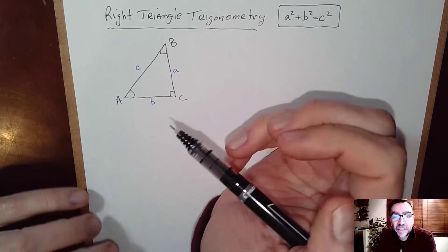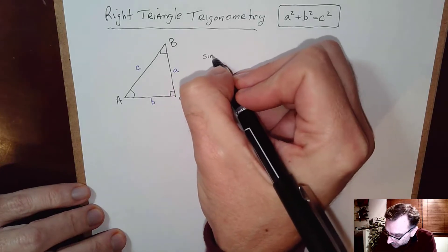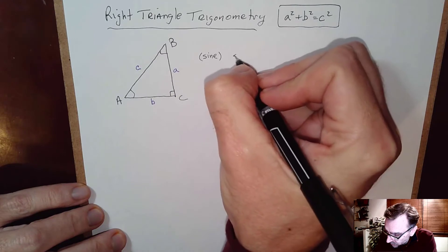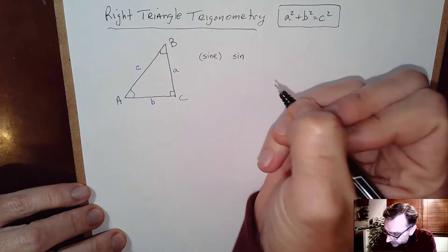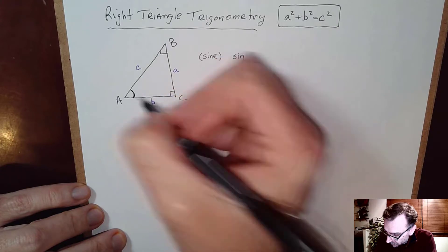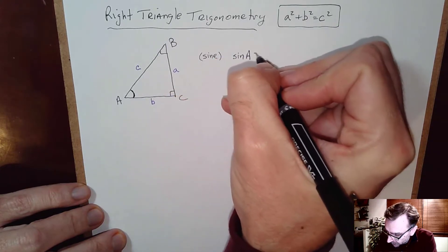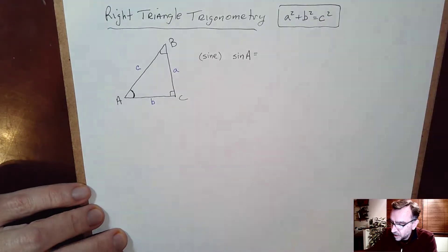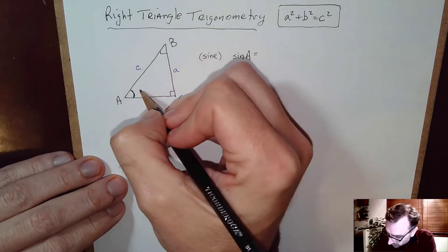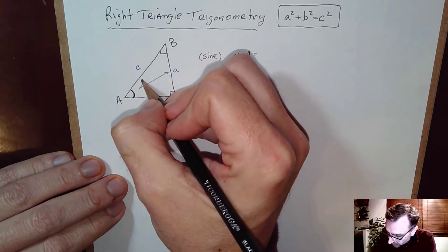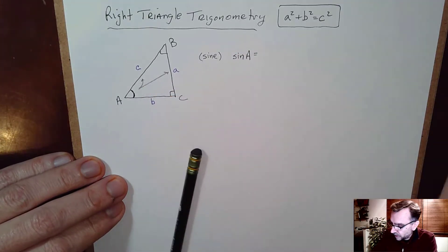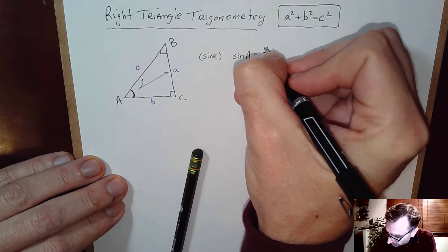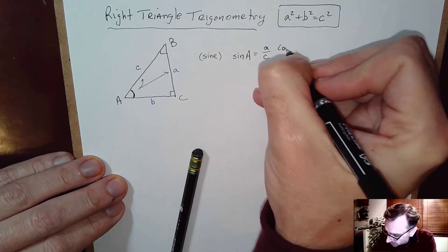By definition, the first one is called sine, spelled S-I-N-E, abbreviated S-I-N. We're going to work on angle A first. Sine of angle A is equal to, by definition, the ratio of the length of the side opposite to the hypotenuse. So this ratio is A over C — opposite over hypotenuse.